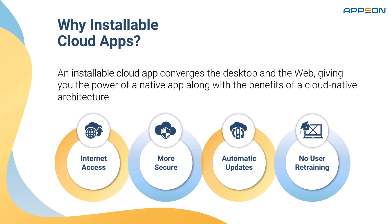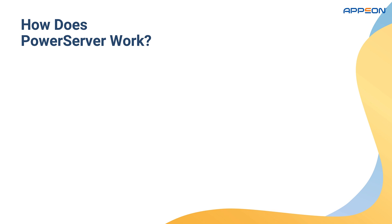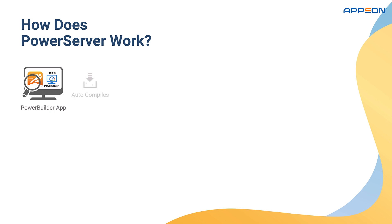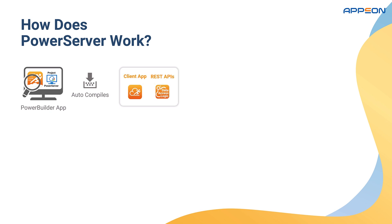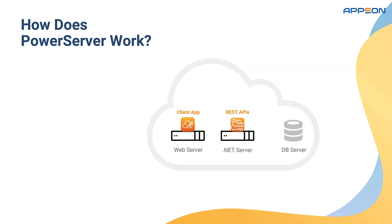So how does PowerServer work? Let's take a look at how PowerServer deploys existing PowerBuilder projects over the internet, and the resulting cloud-native architecture you will achieve. Deploying an existing PowerBuilder project with PowerServer is primarily done through configuration, and the PowerServer compiler generates the corresponding installable cloud app for you. The installable cloud app consists of two components: the client app and the server-side REST APIs. The client app is the visuals of your app, while the REST APIs is the data access logic of your app.